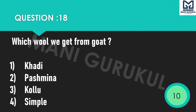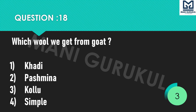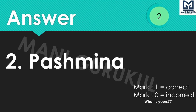Question 18: Which wool do we get from goat? Options: 1st Khadi, 2nd Pashmina, 3rd Kalu, 4th Simple. Your time starts now. 3 seconds left. Time's up. Answer is 2nd: Pashmina.